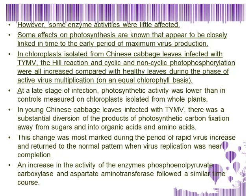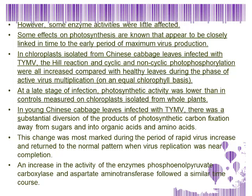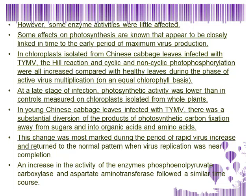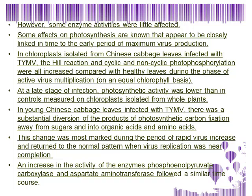At a late stage of infection, photosynthetic activity was lower than in controls, measured on chloroplasts isolated from whole plants. In young Chinese cabbage leaves infected with TYMV, there was a substantial diversion of the products of photosynthetic carbon fixation away from sugars and into organic acids and amino acids. This change was most marked during the period of rapid virus increase and returned to the normal pattern when virus replication was near completion. There was also an increase in the activity of the enzymes phosphoenolpyruvate carboxylase and aspartate aminotransferase, which followed a similar time course.